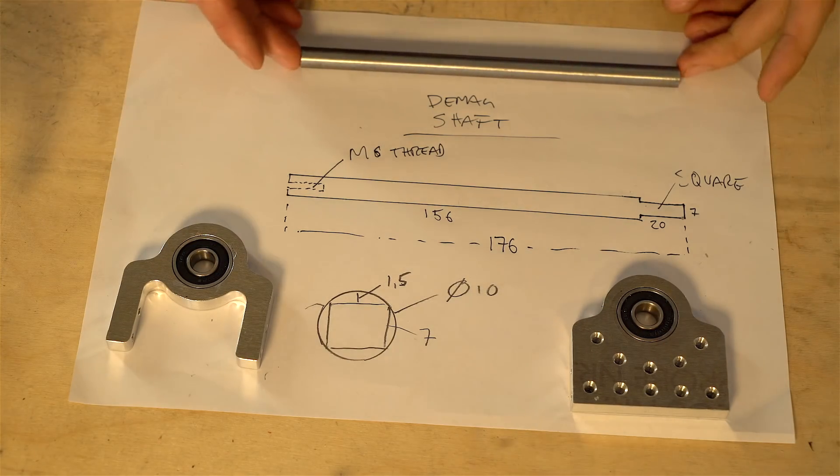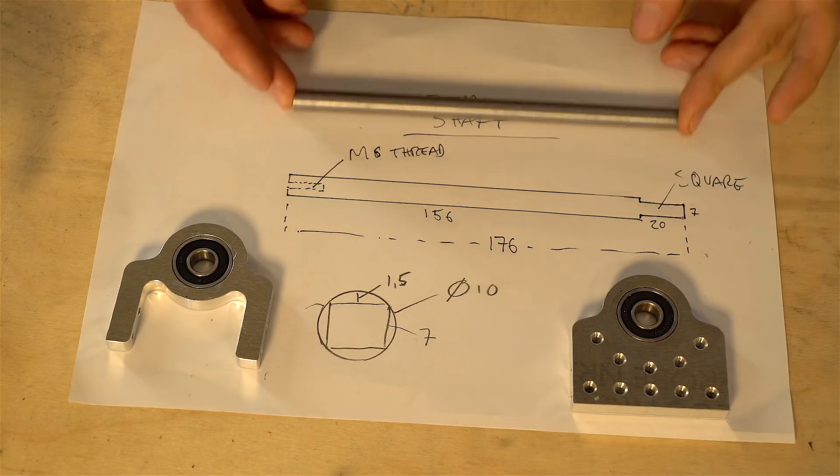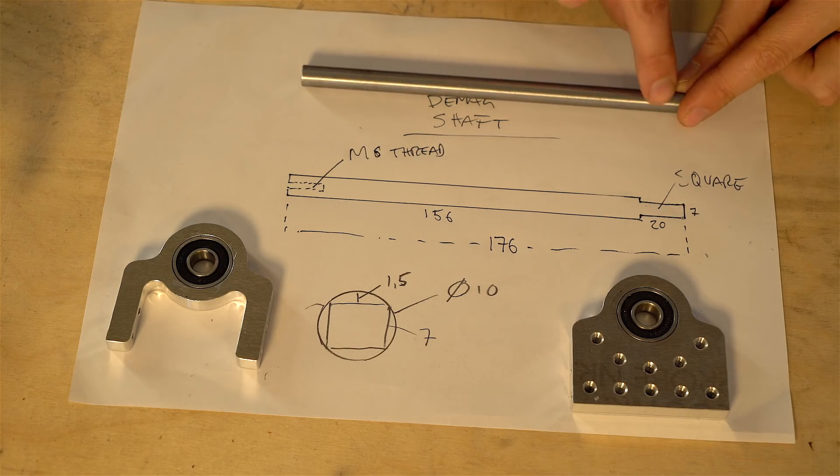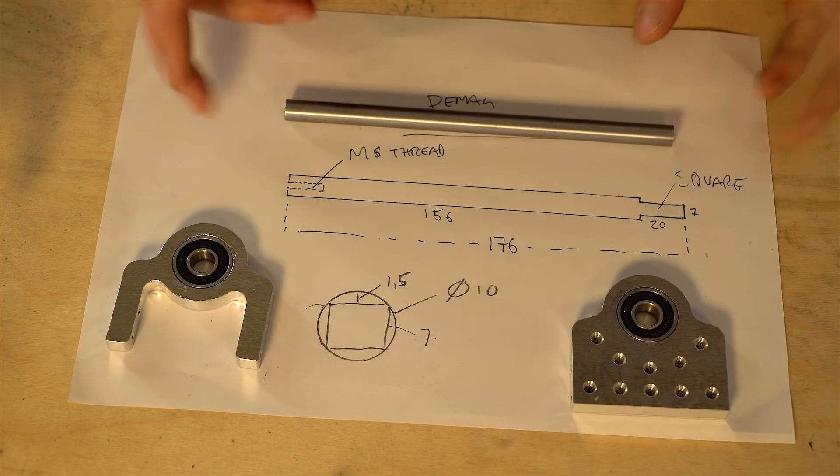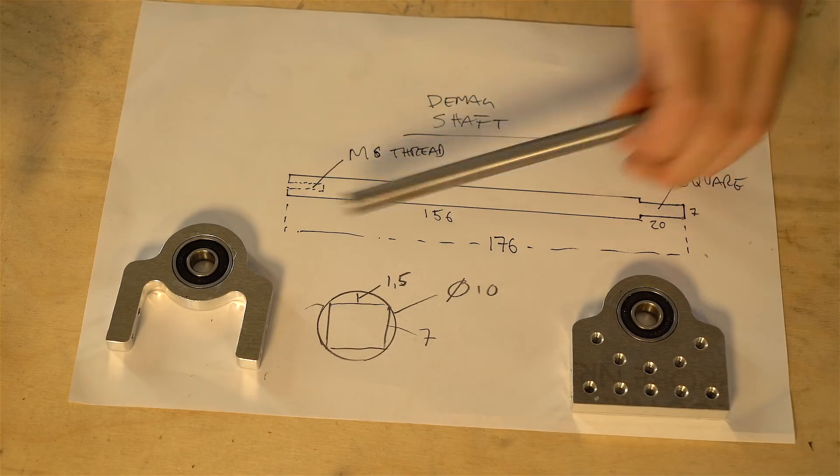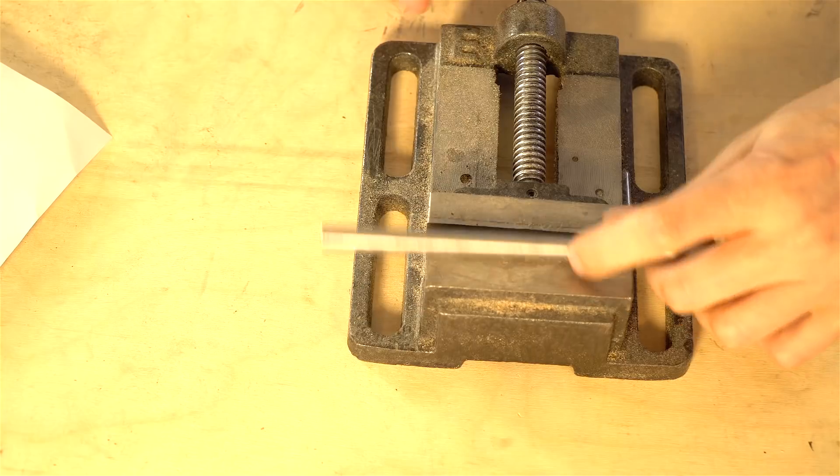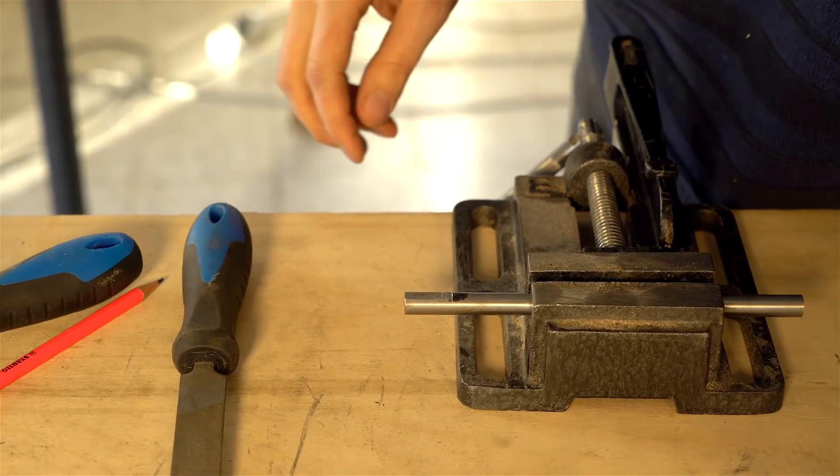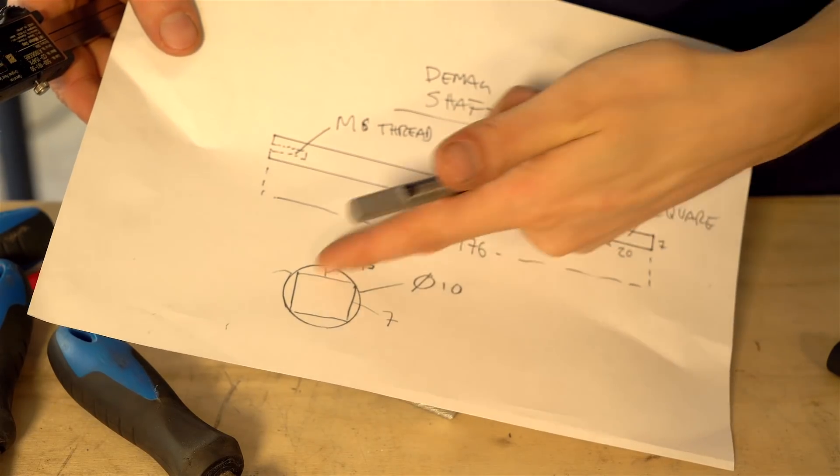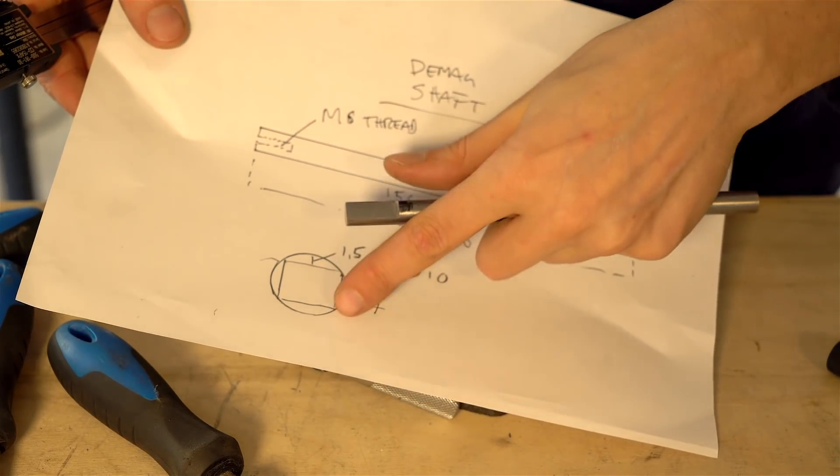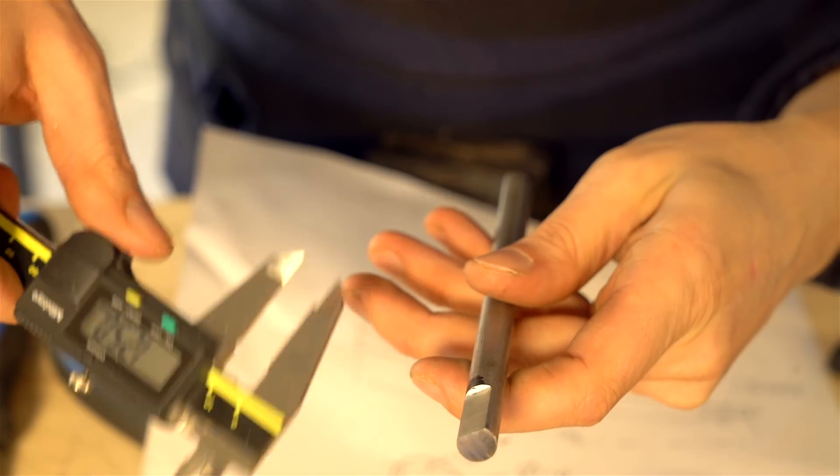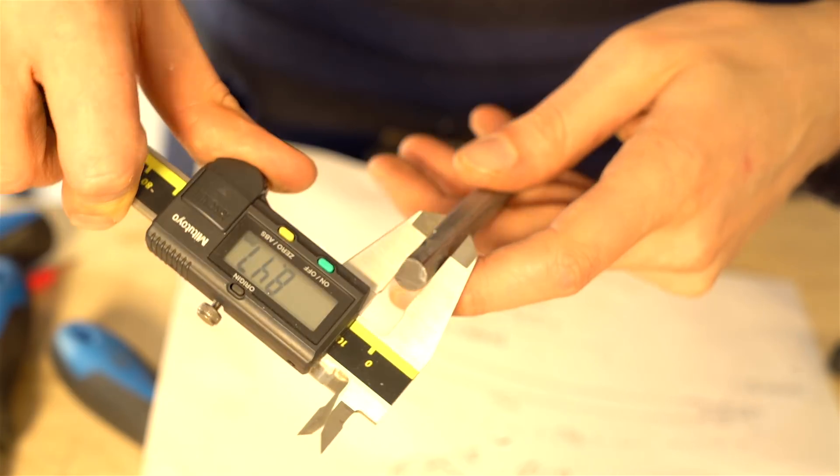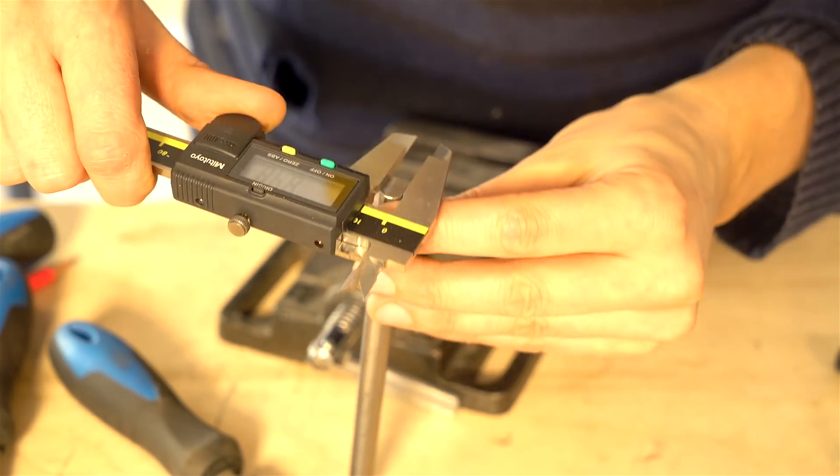So this is the shaft for the bearings and I already cut it to length. I now need to make 20 millimeter on this side into a square, because that's a key that will fit into a pulley later. This is a joke. The shaft is 10 millimeter in diameter and the square side should have 7 millimeter. So you see here, I filed off the first flat. When I hit 850, I know I should stop. Now I'm going to start on the opposite side.